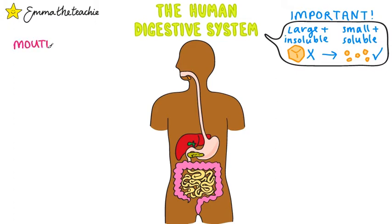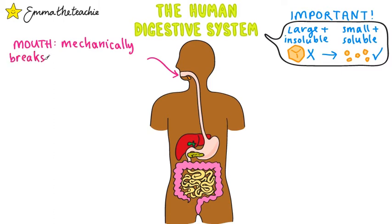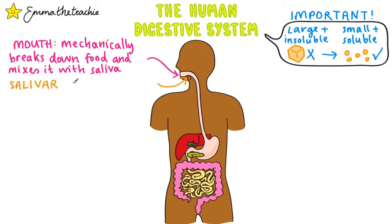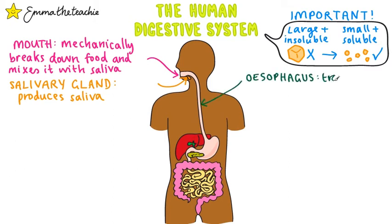To start, we've got the mouth. This takes in the food and mechanically breaks it down with the teeth, then it gets mixed with saliva. Speaking of saliva, over here we've got the salivary glands — these are what produce the saliva. The food then gets swallowed and passed down through the esophagus, which is a tube that transports food to the stomach.